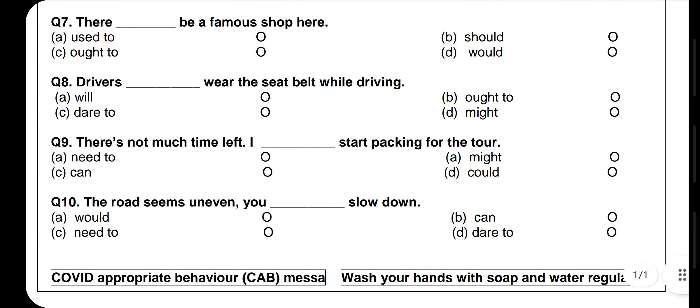Questions 7 through 10 require filling in modals. 'Used to' is for past habits, 'should' for advice, 'ought to' for moral advice, and 'would' for past of will or polite requests. Question 7: 'There ___ be a famous shop here' — since it refers to something that existed in the past, 'used to' is correct. Question 8: 'Drivers ___ wear the seatbelt while driving' — 'ought to' is correct because it is moral advice, not a future statement or expression of courage or possibility.